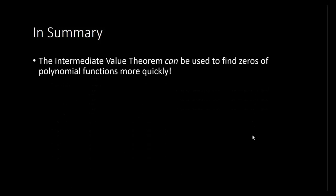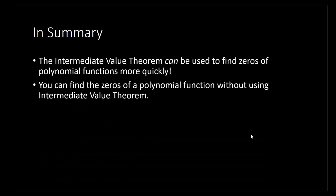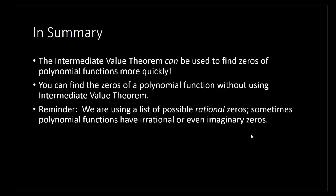In summary, the Intermediate Value Theorem can be used to find zeros of polynomial functions more quickly. But you can also find the zeros without ever using it — this is not a must; it's just a potential shortcut and a good tool to have in your algebra toolbox. Just remember, this is all based off the rational zeros theorem, which gives us a list of possible rational zeros. Sometimes polynomial functions have irrational or even imaginary zeros, so this is not a list of all zeros — only all rational zeros.